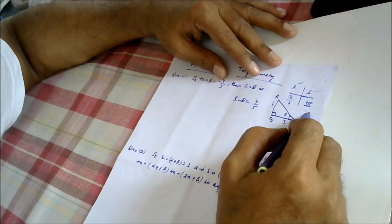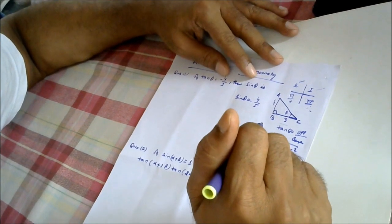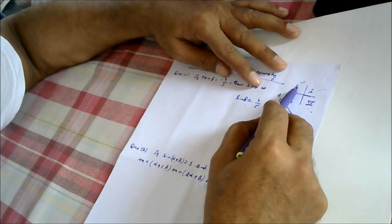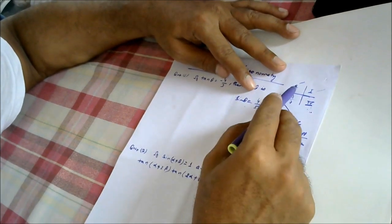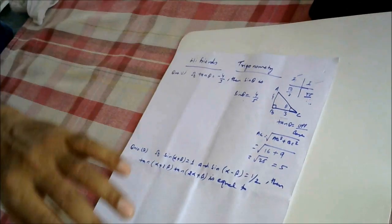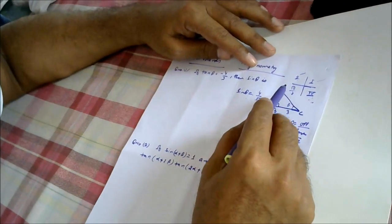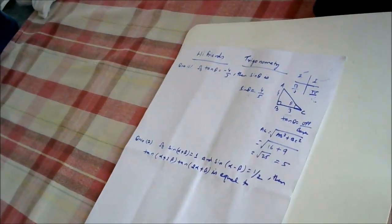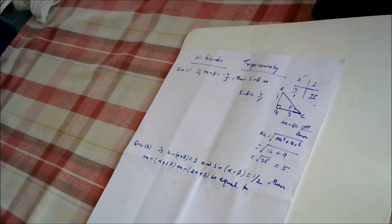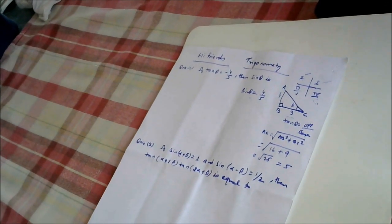So tan θ can be negative only in the second quadrant and only in the fourth quadrant. If the angle is in the second quadrant, sin θ will not be negative — it will be positive. If it moves to the fourth quadrant, then both sin θ and tan θ will be negative.